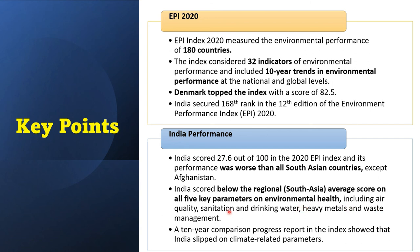To improve overall performance in the Environmental Performance Index, India needs a rigorous and sustainable approach across these five key parameters. India's comparative progress report also shows the country has slipped on climate-related parameters, which further drags down its overall Environmental Performance Index score. This concludes the brief lecture on the Environmental Performance Index — thank you.